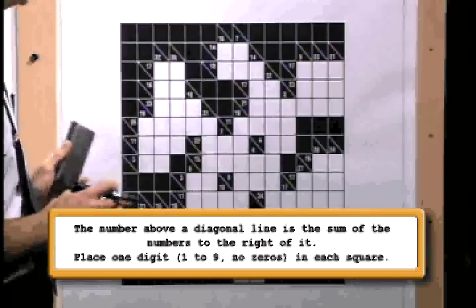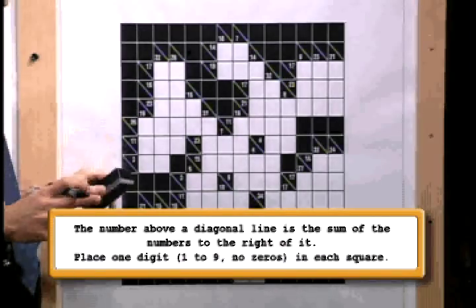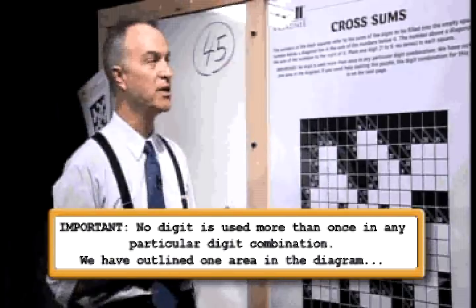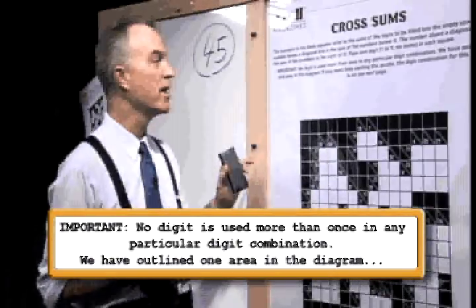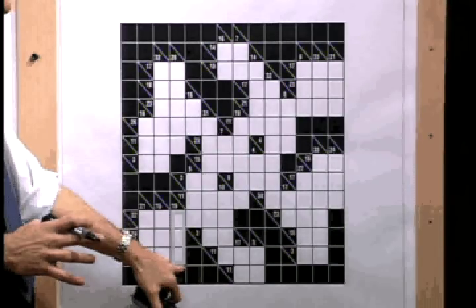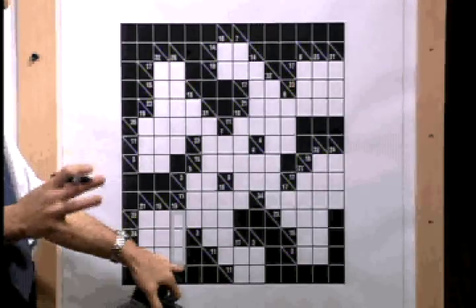Place one digit, one through nine. There are no zeros in this puzzle. Important, no digit is used more than once in any particular digit combination. We've outlined one area in the diagram. If you need help starting the puzzle, the digit combination for this area is on the next page.